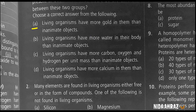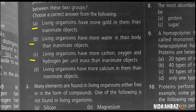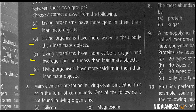A. Living organisms have more gold in them than inanimate objects. B. Living organisms have more water in their body than inanimate objects. C. Living organisms have more carbon, oxygen, and hydrogen per unit mass than inanimate objects. Or D. Living organisms have more calcium in them than inanimate objects.